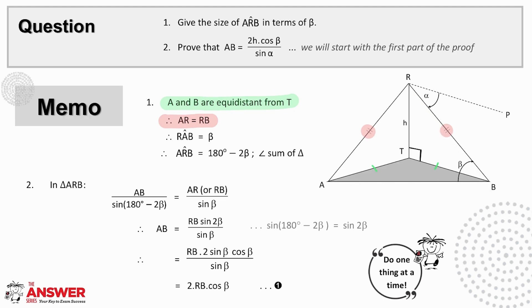And so angle RAB is then also beta, which means that angle ARB, the third angle of the triangle, is 180 minus 2 beta.